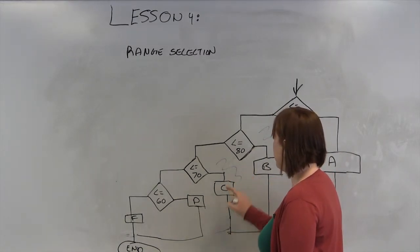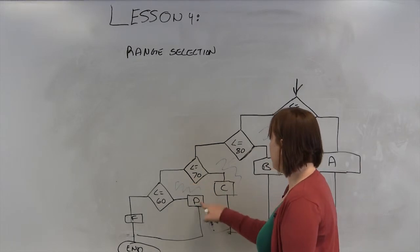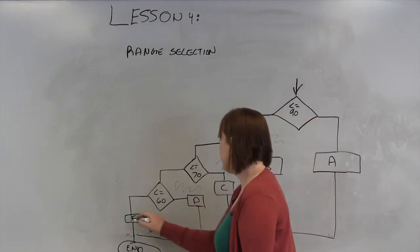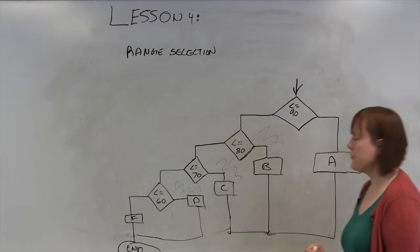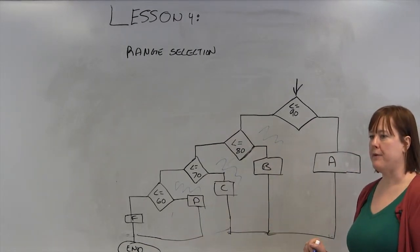Between 70 and 80, that's a C. Between 60 and 70, that's a D. Less than 60, that's an F. And that's how you filter through a range when you're doing comparisons.